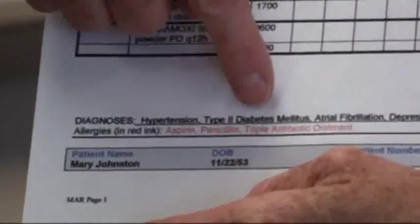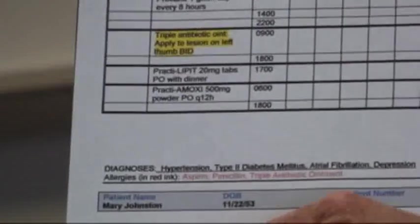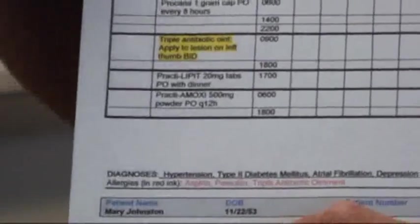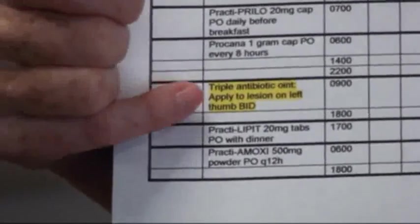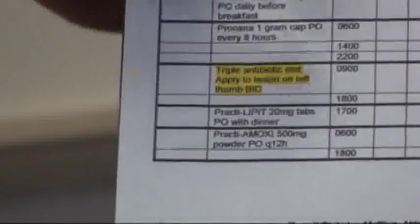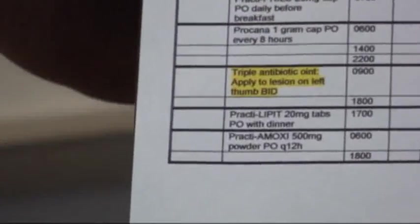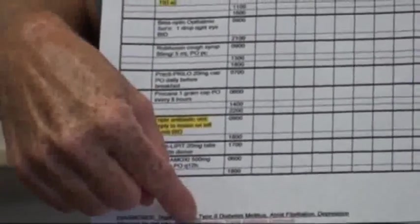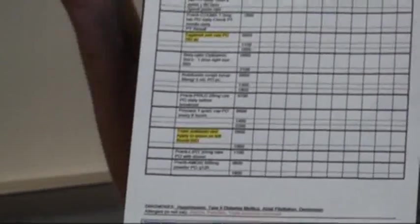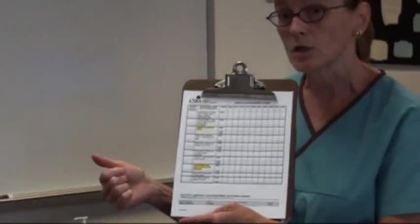The next problem: notice the allergies in red across the bottom say Aspirin, Penicillin, and Triple Antibiotic Ointment. When you get ready to give meds, you should always scan through and look at all the medications, not just the ones you're giving for your time. As it turns out, Triple Antibiotic Ointment applied to the lesion on the left thumb BID at 9 o'clock is on this MAR — but they're allergic to it. So what you want to do is DC it completely off, discontinue it, pull it out of the drawer, and alert the prescriber — the physician or nurse practitioner — and also alert pharmacy.